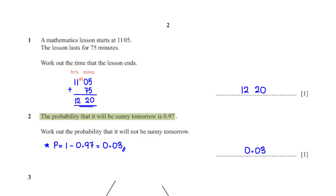The probability that it will be sunny tomorrow is 0.97. Work out the probability that it will not be sunny tomorrow. The sum of the probabilities that it will be sunny and not sunny must add up to 1. So to get the probability that it will not be sunny tomorrow, we subtract 0.97 from 1, which gives us 0.03.